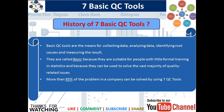These basic QC tools are the means for collecting data, analyzing data, identifying the root cause, and measuring the result. They are called basic because they are suitable for people with little formal training in statistics, and because they can be used to solve the vast majority of quality-related issues. It is believed that 95 percent of the problems in a company can be solved by using the seven QC tools.